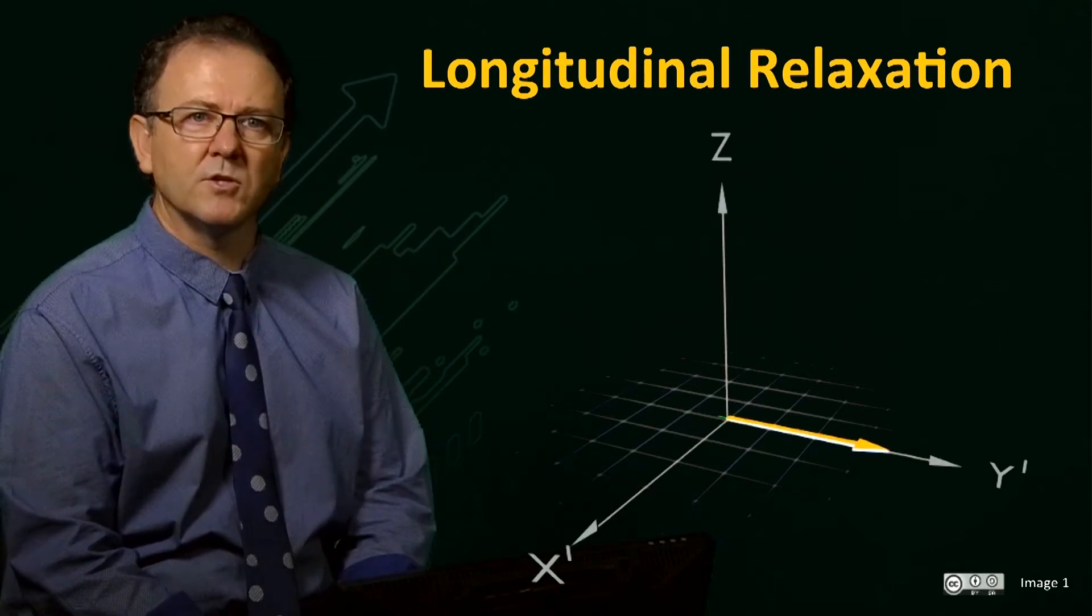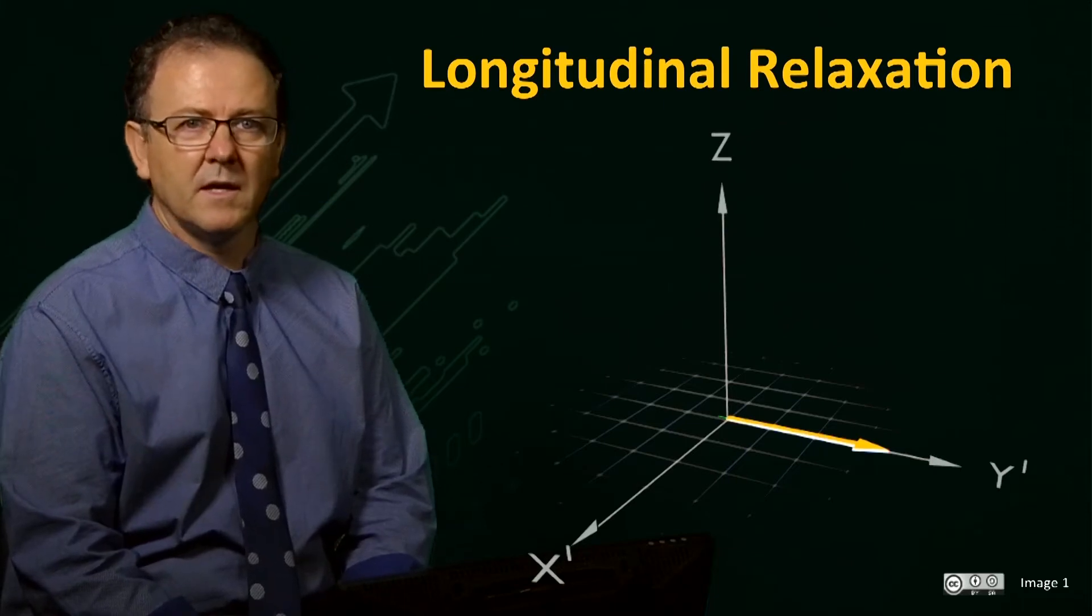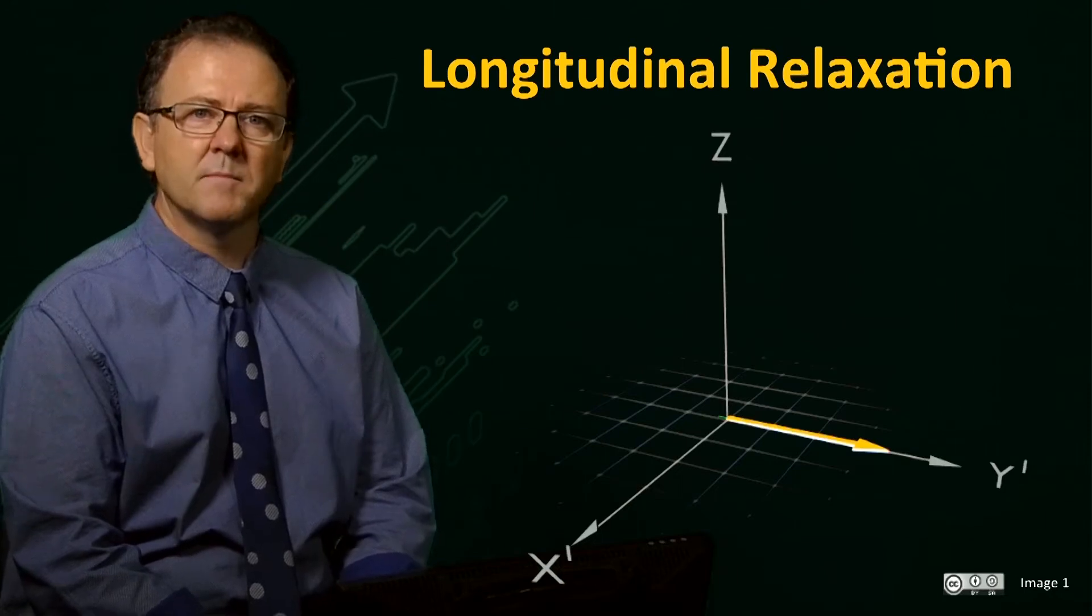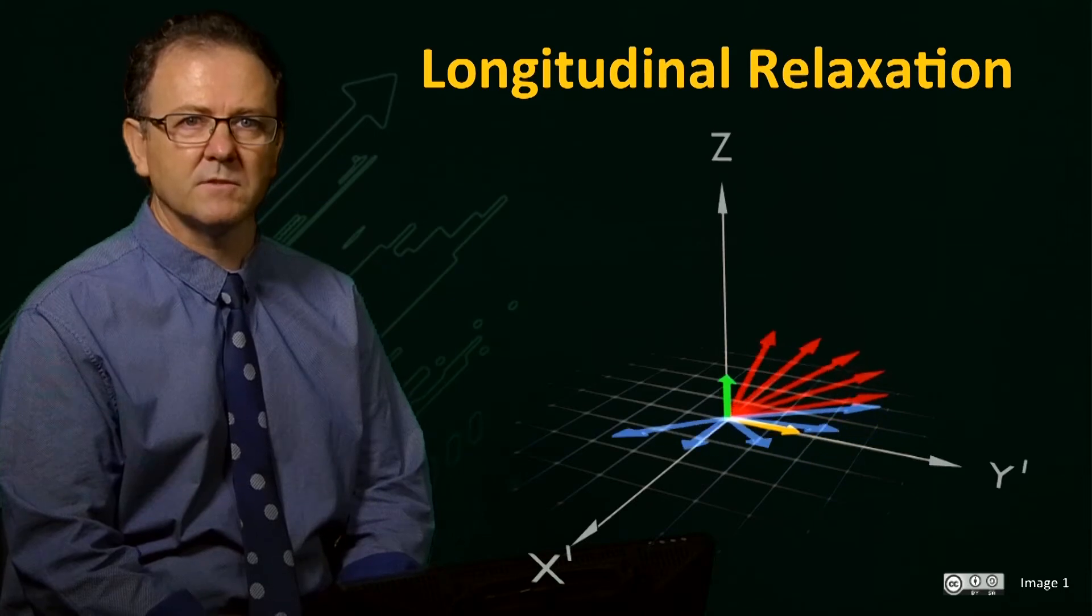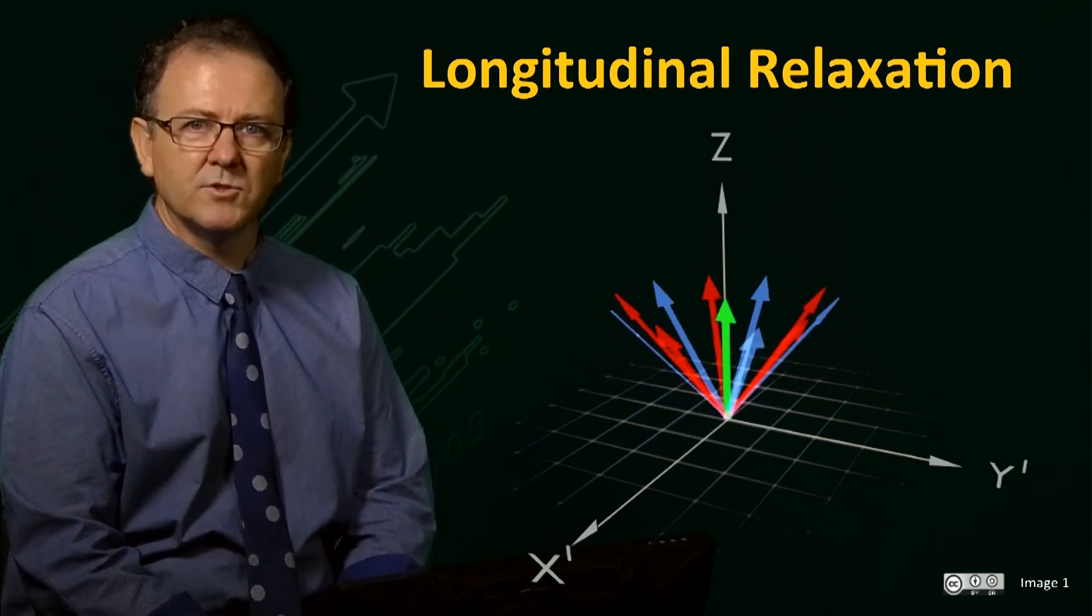This re-equilibration occurs at the same time as the transverse de-phasing. Here we see this process occurring in the rotating frame of reference. Watch carefully. The yellow vector represents the net transverse magnetization. As the vectors de-phase, the yellow vector reduces to zero, as we have seen before.